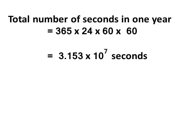So, the total number of seconds in one year is equal to 365 × 24 × 60 × 60. This will give you 3.153 × 10^7 seconds.